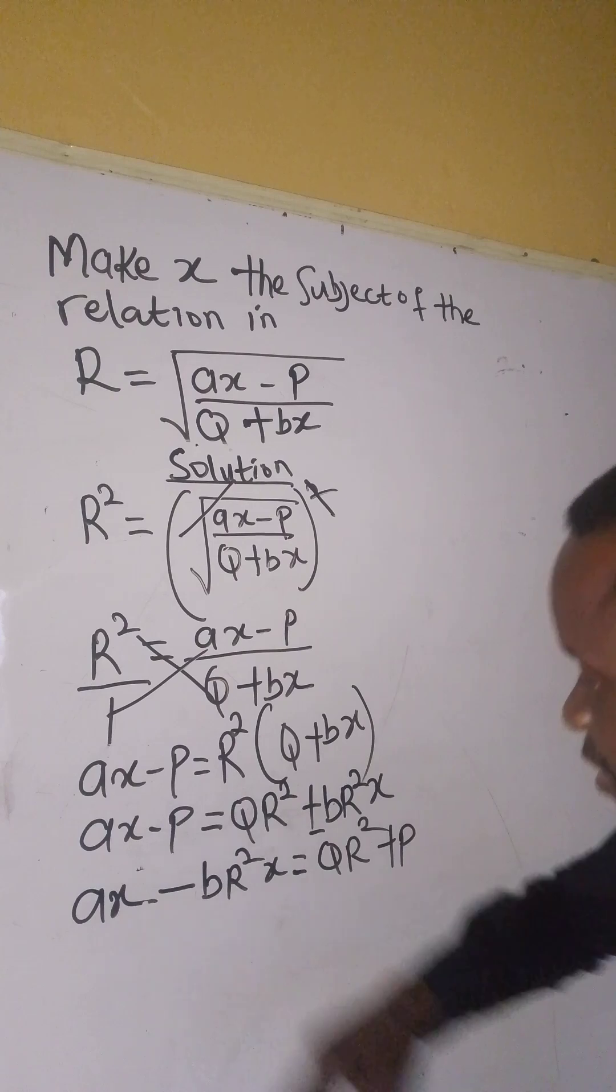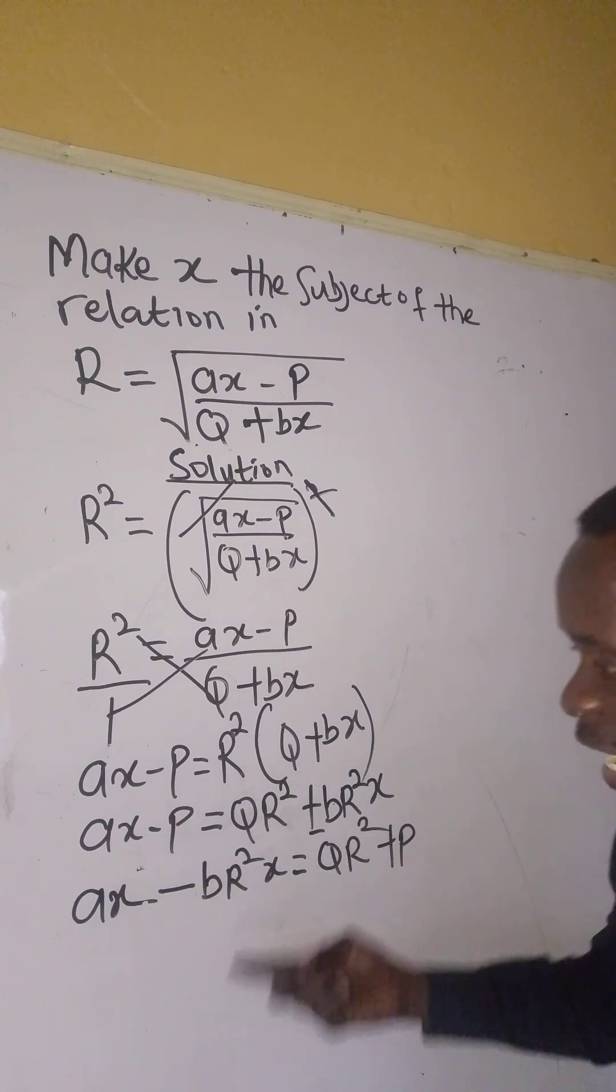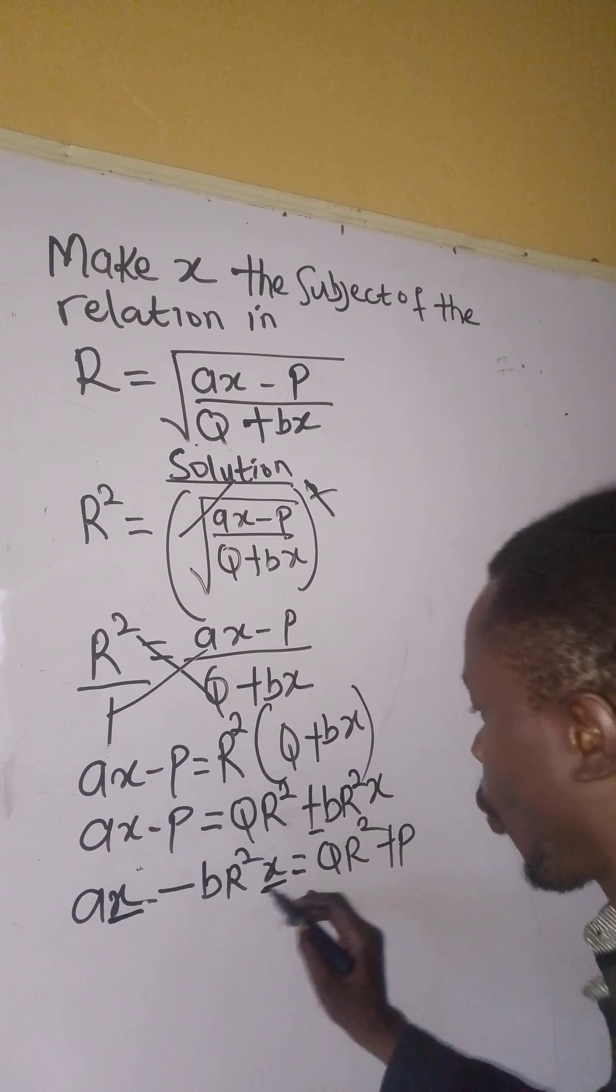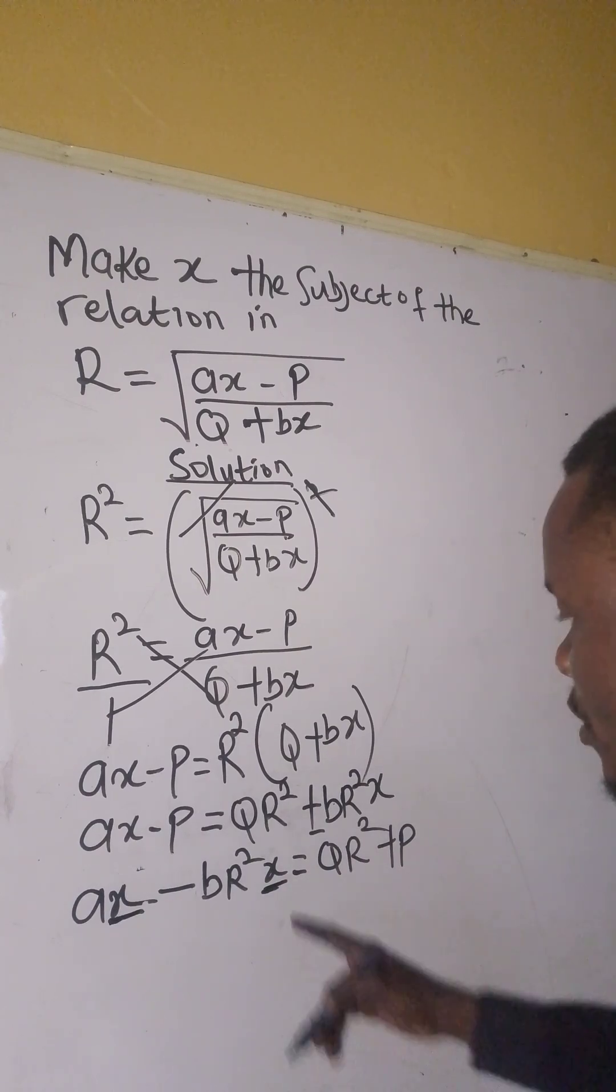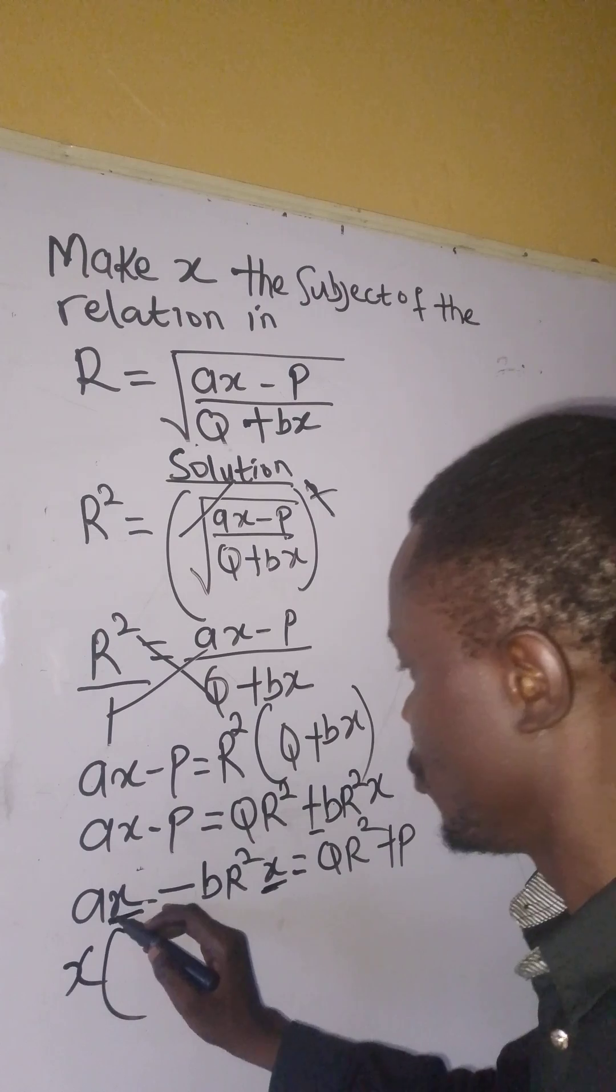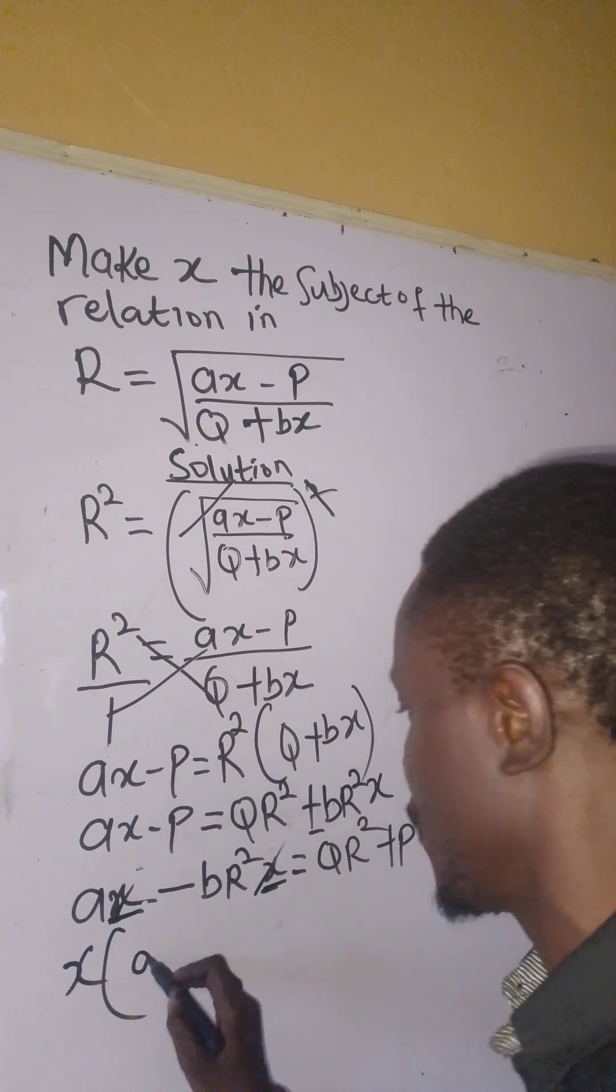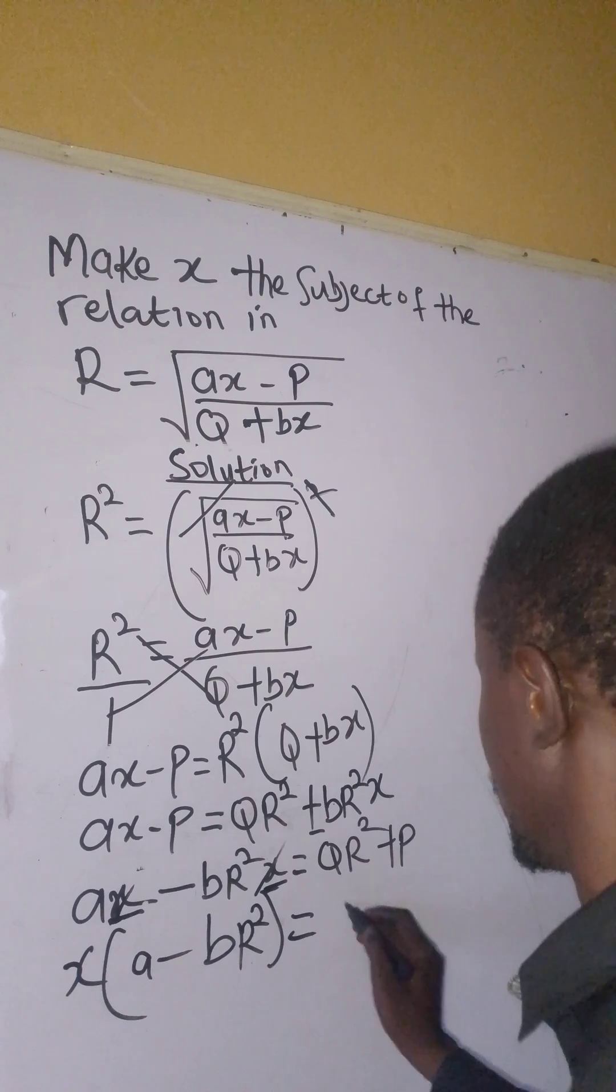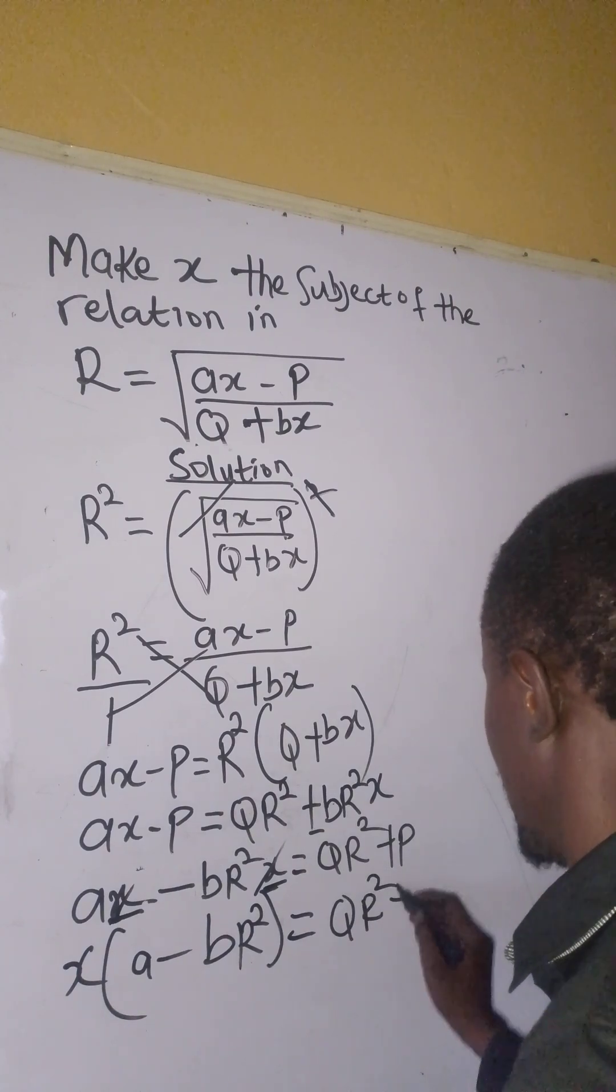Okay, now what can we do? x is here, x is here. We can't add, we cannot subtract. So what do we do? We find what is common - x is common here and here. So we have x into brackets. We take x out, we have a - br² equals qr² + b.